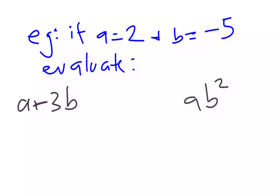For example, if we get told that a equals 2 and b equals negative 5, we can evaluate an expression that has those two pronumerals in it. For example here, a plus 3b.